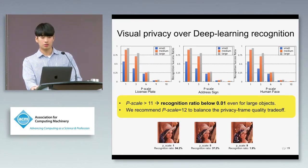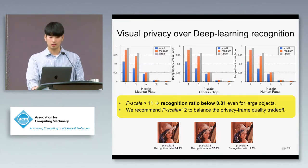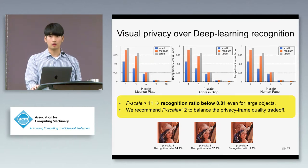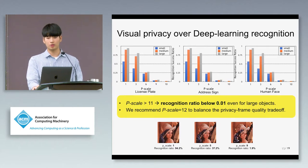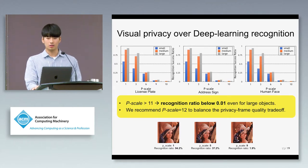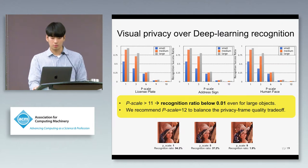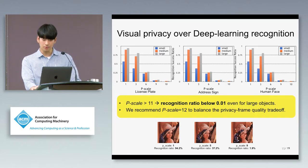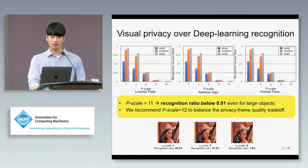Our experiments show that in the context of 1280×720 HD frames, the recognition success ratio becomes below 0.01 even for large-sized objects when the pixelation scale is higher than 11.